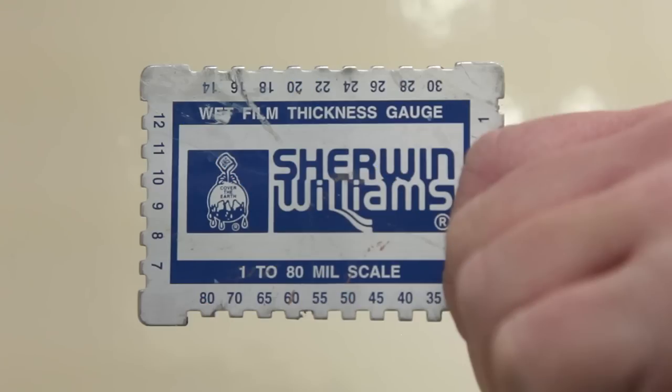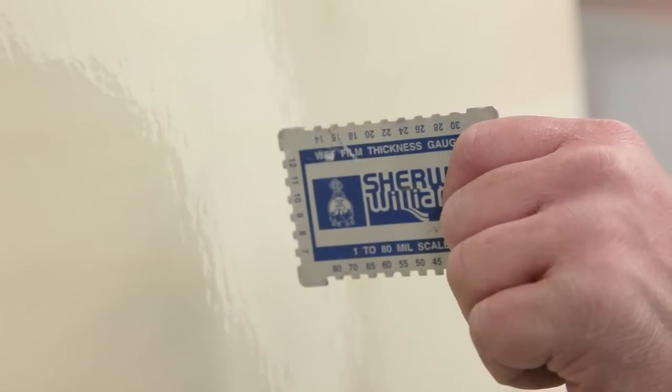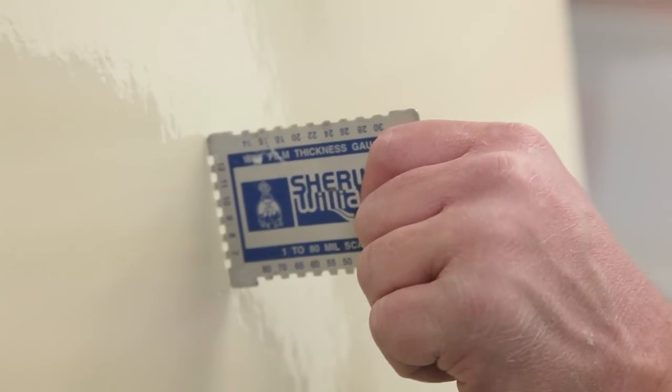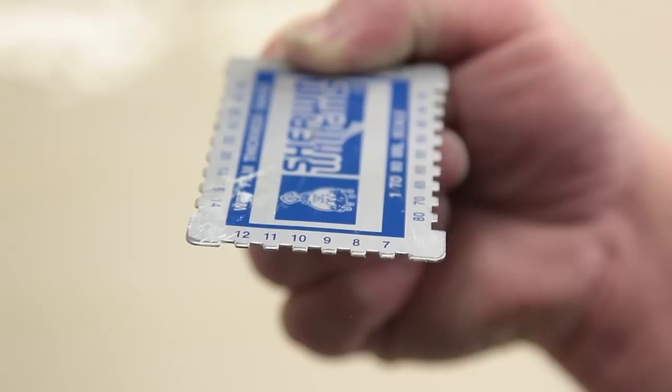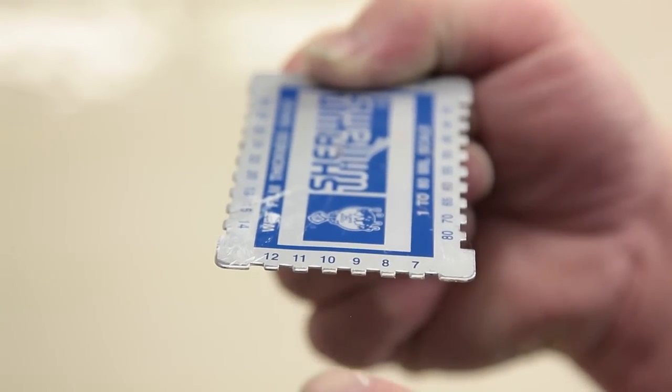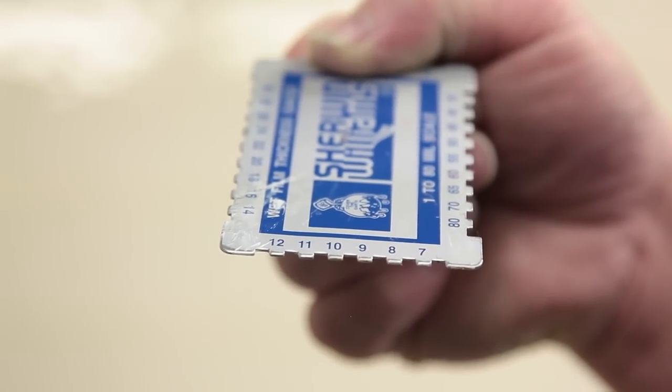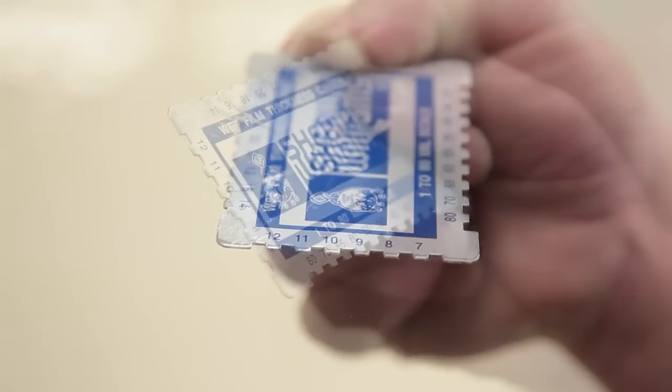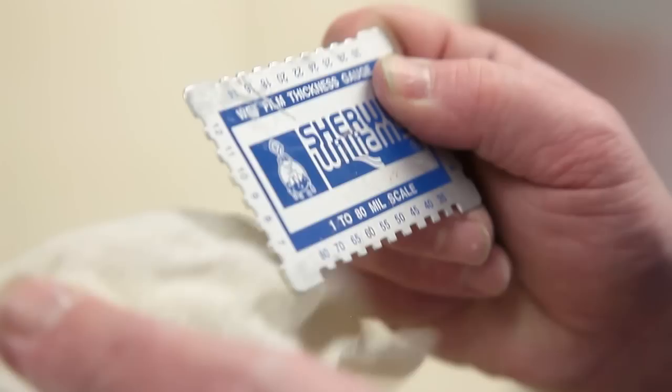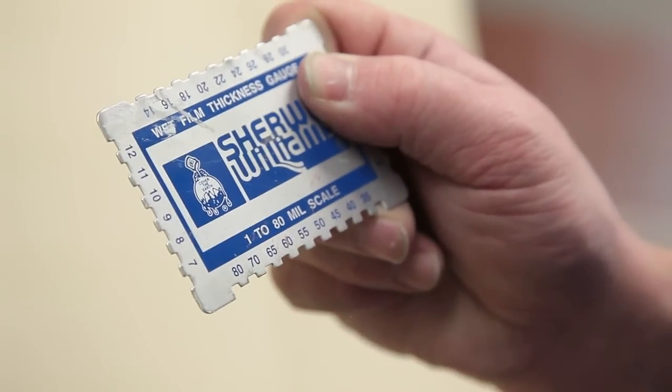Although there are several types of gauges used to measure mill thickness, this common tool has notches spaced at one mill increments. Hold the gauge at a 90 degree angle to the surface and press firmly, ensuring that both sides contact the substrate. The number above the last visible notch indicates the mill thickness of the coating. If you're measuring wet film thickness, there will be a trace of paint on the gauge. Make sure to clean the gauge as soon as you're finished so it'll be accurate the next time you take a reading.